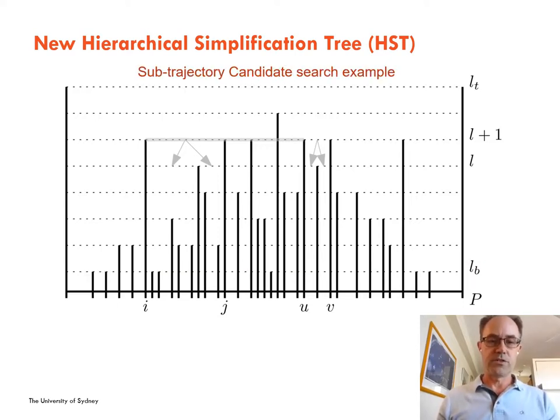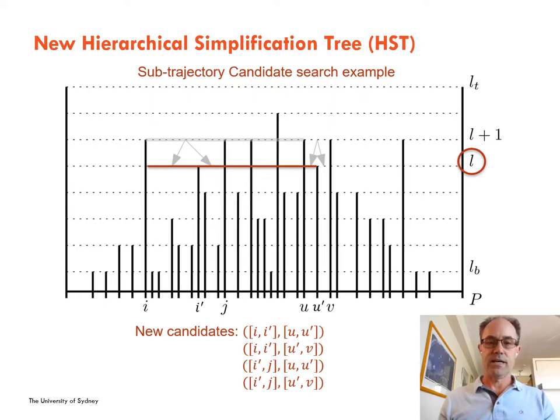A toy sub-trajectory candidate search example is as follows. We have a single active sub-trajectory candidate at level L plus 1 that starts in interval ij and ends in interval uv. At the next level down, we generate new candidates by computing all pairwise start and end intervals.